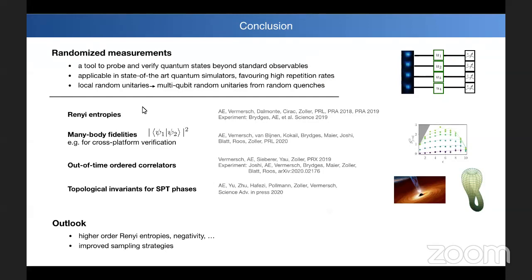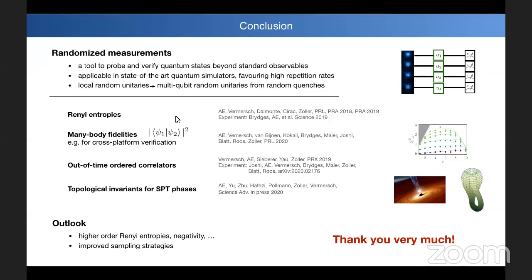In conclusion, randomized measurements are a really nice tool to probe and verify quantum states beyond standard observables. They are very nicely applicable in all kinds of state-of-the-art quantum simulators where you have single-site control and readout. Importantly, all these local random unitary operations can also be replaced by multi-qubit random unitaries generated by Clifford gates — so if you're just interested in a 2-design — or by time evolution in quantum simulation experiments. This sometimes gives an advantage in statistics at the cost of higher experimental complexity. Thank you very much for your attention.